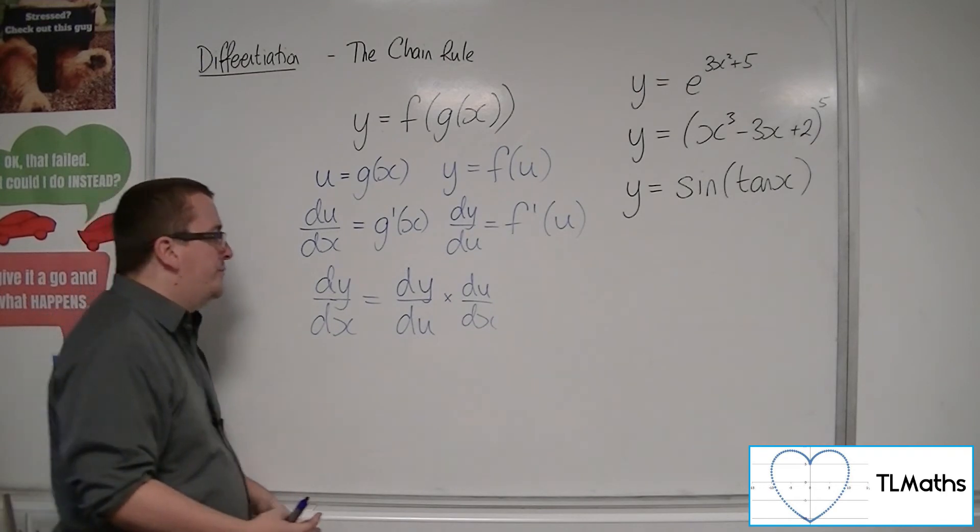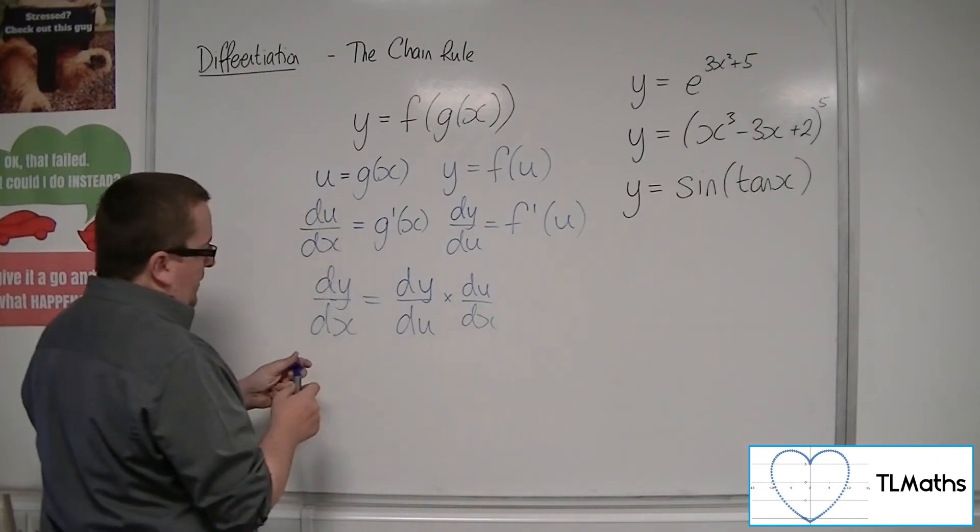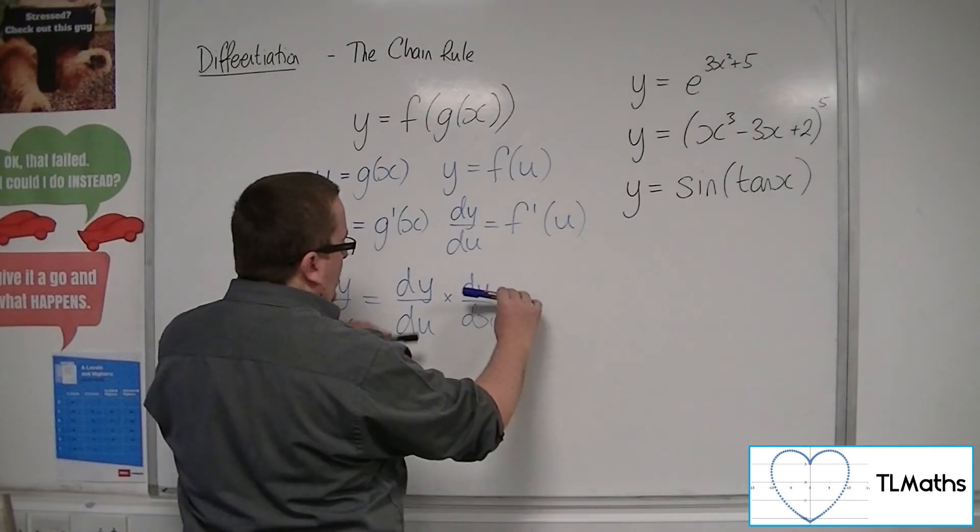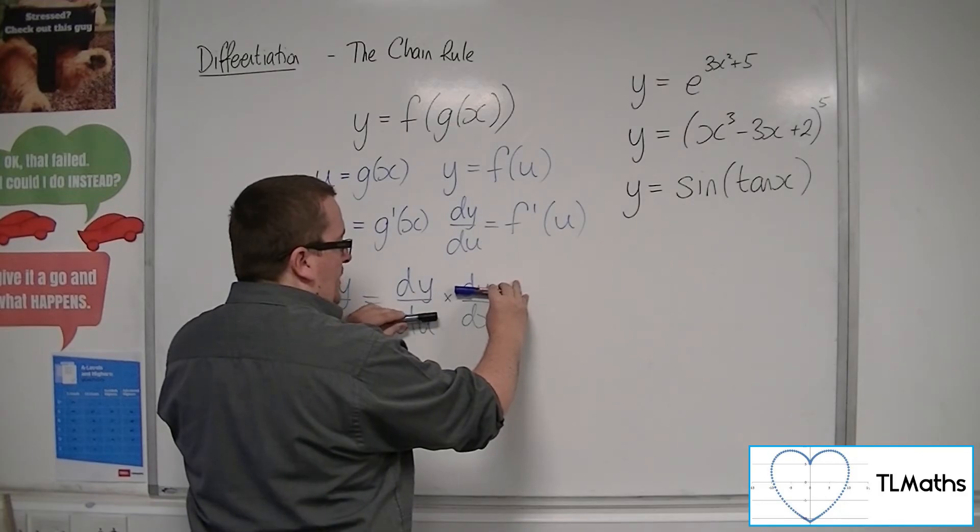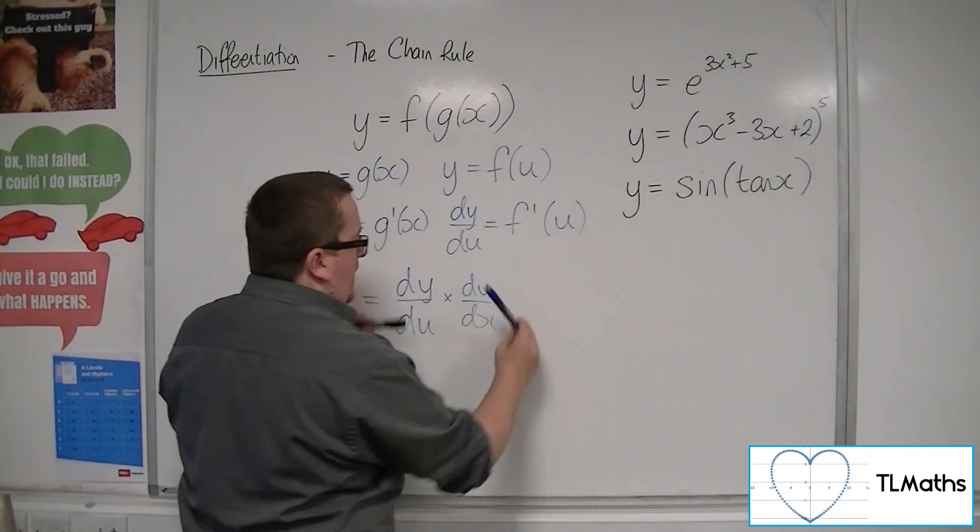But at this stage, this is how we need to see it. This idea, effectively, that the du's would cancel each other out when you multiply these fractions, leaving you with dy by dx.